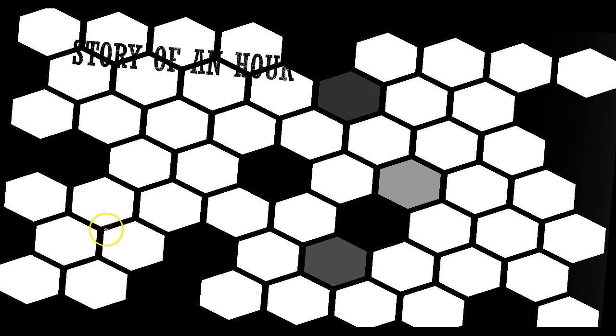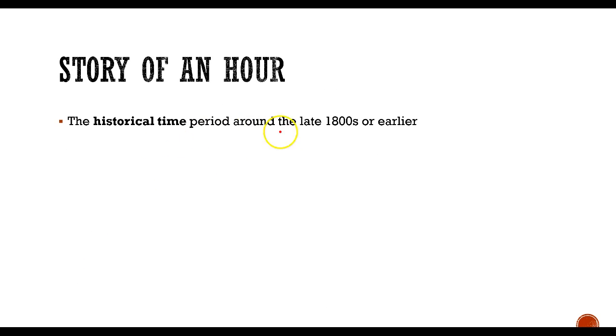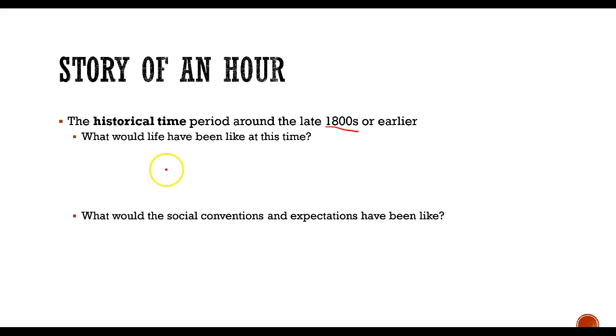So let's take a look at setting in two short stories. One is story of an hour. In story of an hour, the historical time period is around the 1800s. The story was written in the late 1800s. So we assume it probably takes place then or earlier. So what would life have been like at this time? Probably pretty hard. There was no electricity. Probably no running water. Probably, well definitely no cars. So it definitely would have been a tough life.